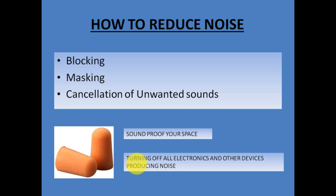We can turn off all the electronics and other devices which are producing the noise. These devices include computers, game systems, and televisions, which produce a lot of noise. If we turn off these electronics totally, then over a period of time all the ill effects caused by these sounds will not happen. So these are the three ways — blocking, masking, and cancellation of unwanted sound — by which noise can be reduced to a very large extent.